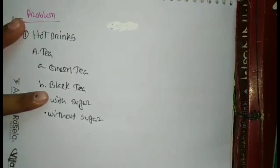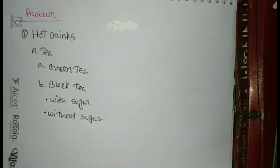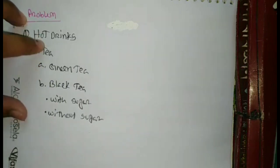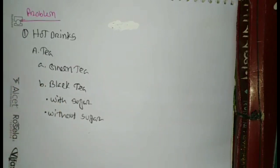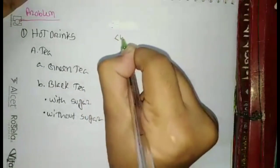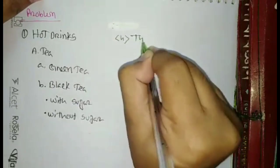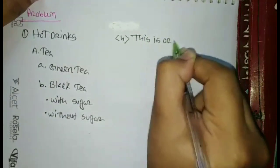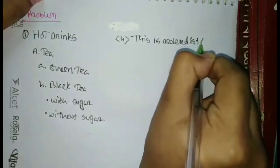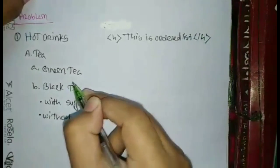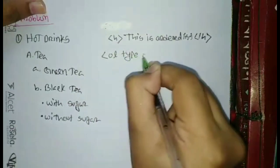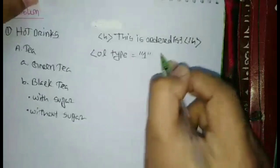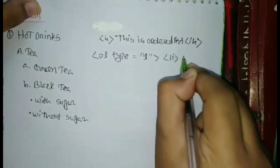First one under hot drinks. Under tea, capital A, and capital A under green tea and black tea. Under list with sugar, without sugar. So first we will give heading. This is order list, that close. Then we check all order list. Type equal double quotation 1, then close a line tag.